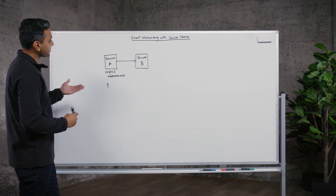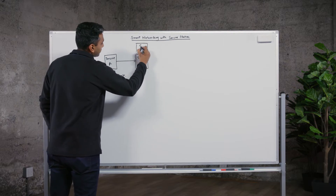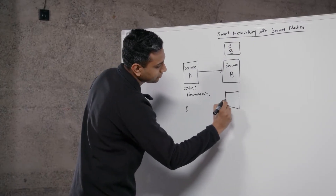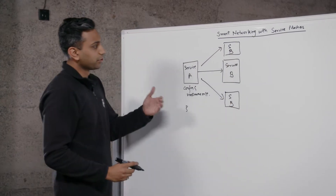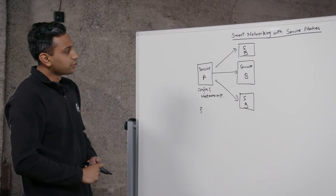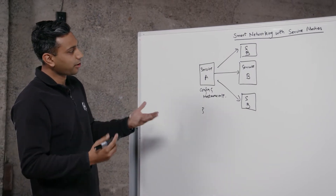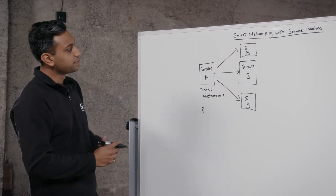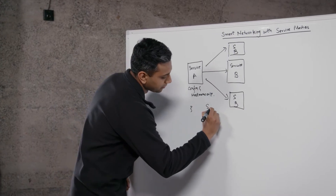But in reality, this is not the case. You have multiple instances of services — service B, service B — all of these can be receiving traffic on the other end. So we have this problem: a service discovery problem. How does service A talk to service B? What instance of service B should service A talk to? So we have a problem for service discovery.